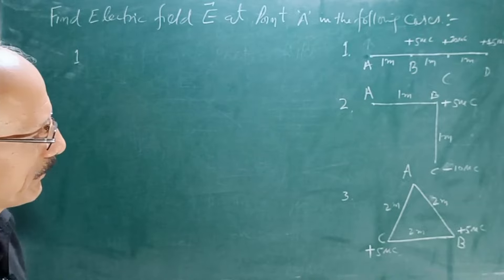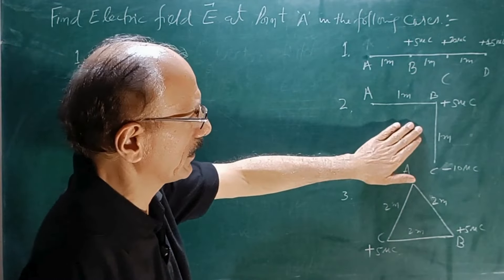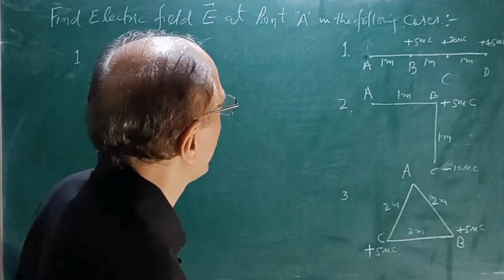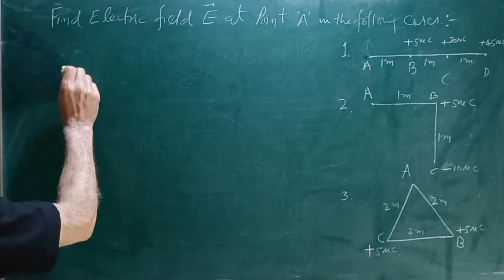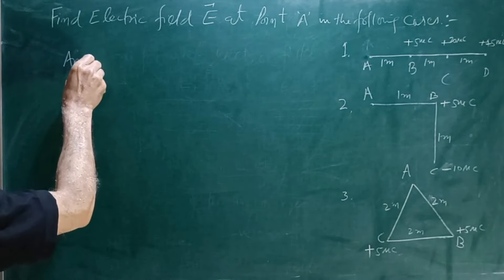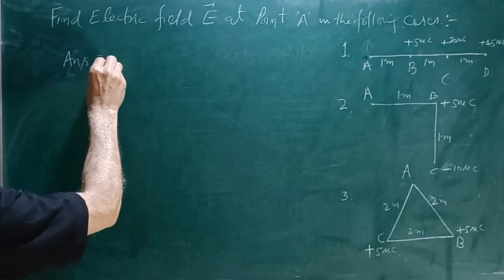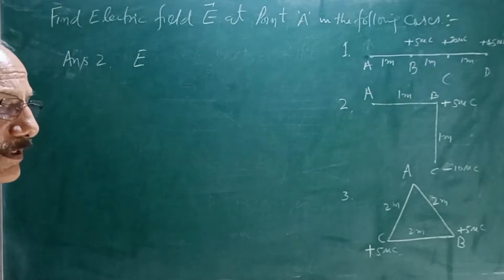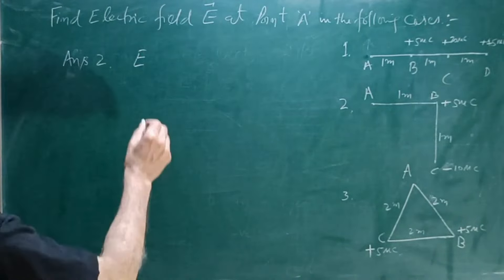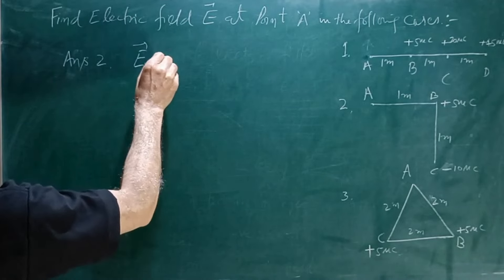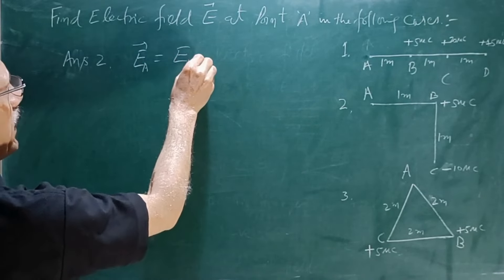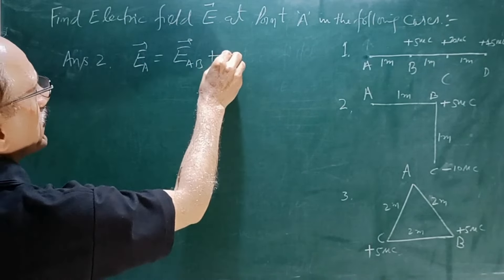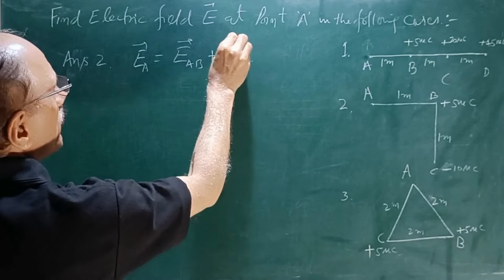So I will try to solve this one, second question, Answer 2. The electric field according to superposition principle - electric field at A will be nothing but electric field at A due to B plus electric field at A due to C.